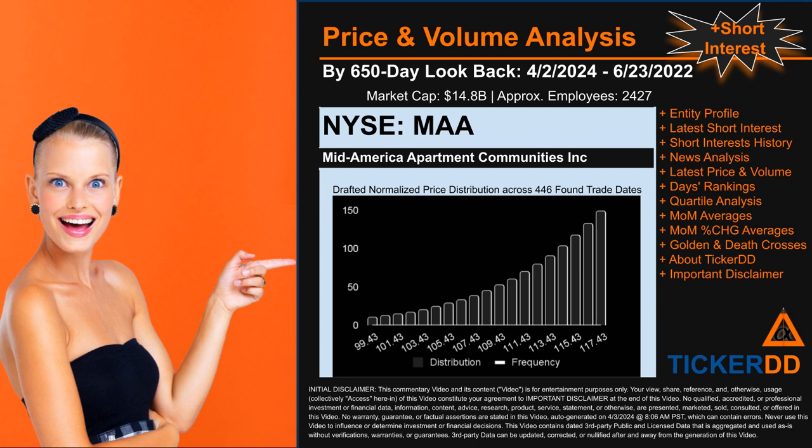The chart shown on this page is our initial attempt at studying the price for MAA after dynamically normalizing price distribution across those 446 discovered trade dates. The bar chart is the generated distribution, and the overlaid line graph, if it is generated, is the frequency of the prices on the x-axis. We will enhance this look-through as our model progresses in the next iteration.